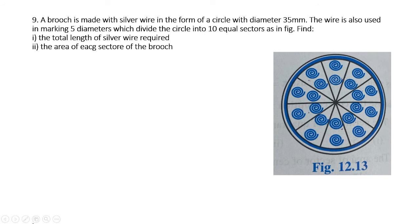The next question: a brooch is made with silver wire in the form of a circle with diameter 35 mm. The silver wire is also used to mark 5 diameters inside the circle — so there are 5 diameters dividing the circle. We are first asked to find the total length of silver wire required.